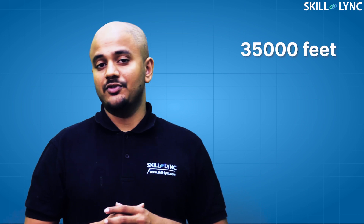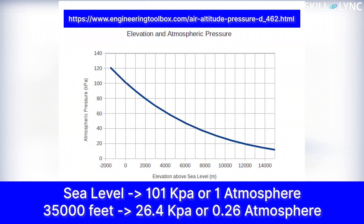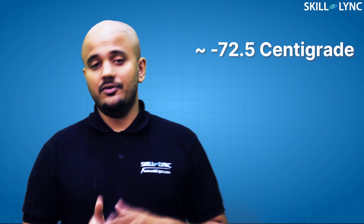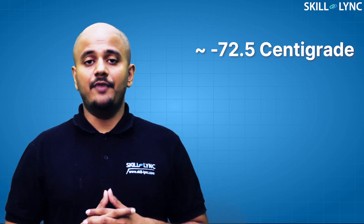Commercial aircraft normally fly at altitudes of 35,000 feet. This is done to reduce the amount of drag on the aircraft and also increase the efficiency of the engines. However, at such high altitudes, the atmospheric pressure is typically one-fifth of what it is at sea level, and the temperature is also very low.